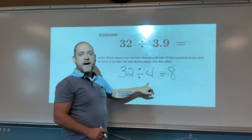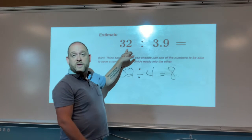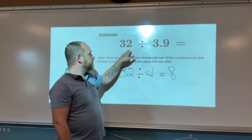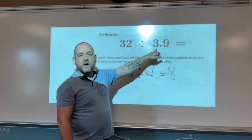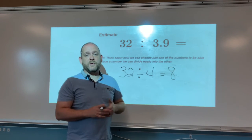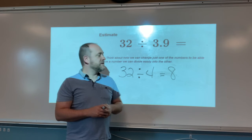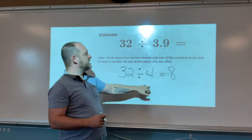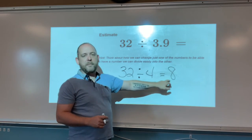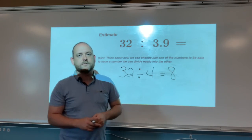Again, 4 is going to be compatible because it is one of the factors of 32. Of course 4 and 8 gives us 32. And it is also very close, only one tenth away from 3.9. So again, 4 is going to be a good estimate. Therefore, a good estimate for this problem would be about 8. Move on to number 2.